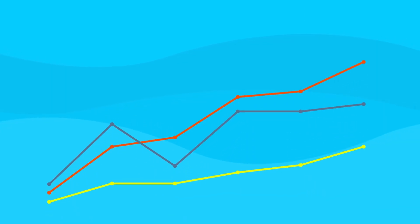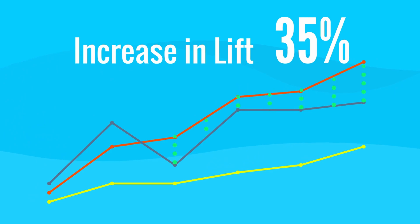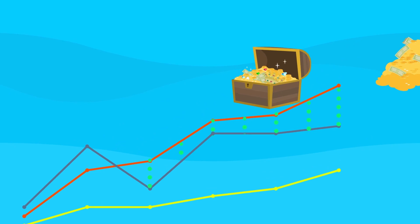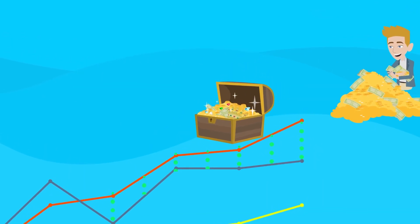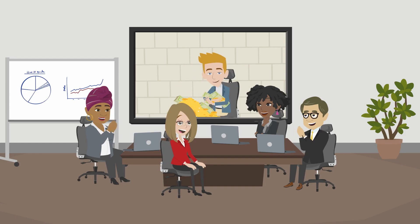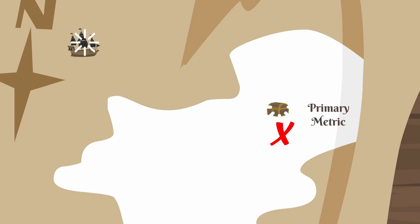Your lift and confidence numbers will tell you how much better or worse your new variation is and how much you can rely upon that data based on the statistical confidence. This brings us back to how A/B testing can help you personally. If you're looking for that raise or promotion, you can show how the tests you're running have been able to increase your primary metric and increase the revenue for the business.